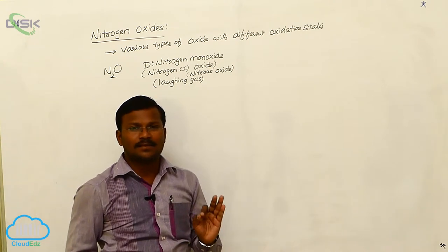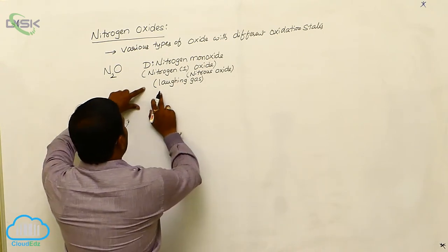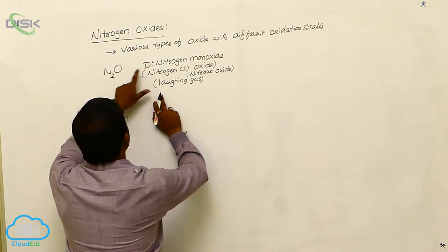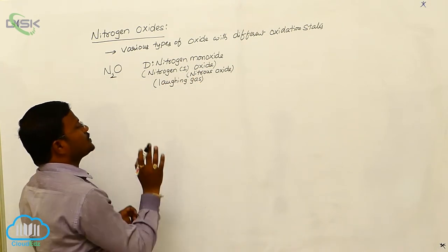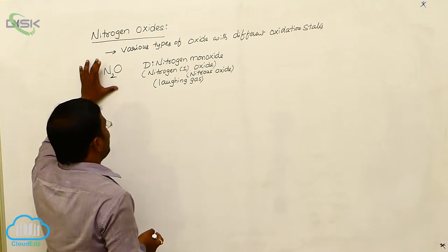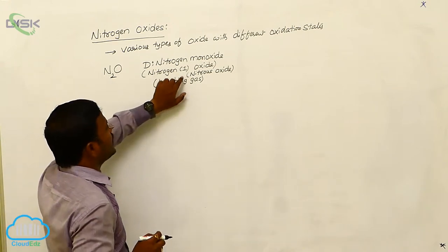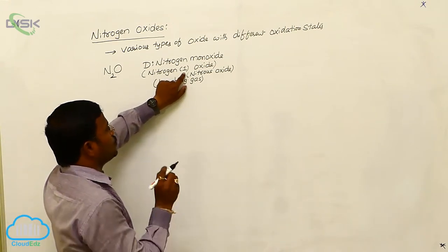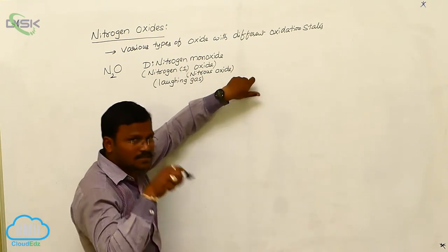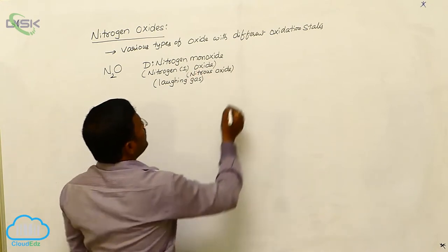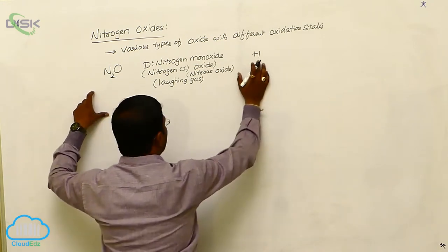A likely NEET question is: what is laughing gas? Nitrous oxide is called laughing gas. N₂O is called dinitrogen monoxide or nitrogen(I) oxide. Why is it called nitrogen(I) oxide? In N₂O, the oxidation state of nitrogen is +1, so we indicate the oxidation state with a Roman numeral in brackets.